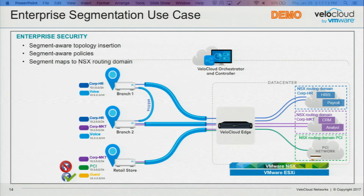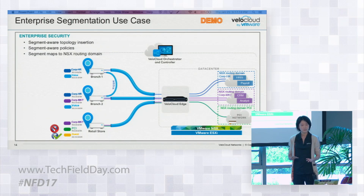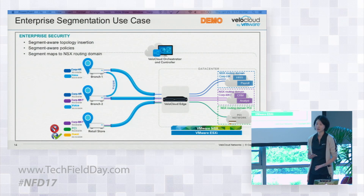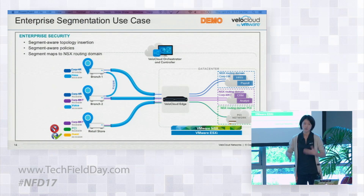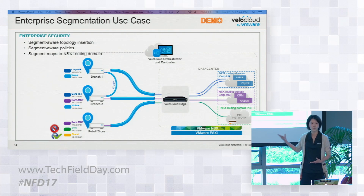Why do we need that? For example, with voice service, you want to enable dynamic edge-to-edge between branches when branch A is calling branch B — you want that media traffic to go directly from branch A to branch B without backhauling. Versus other corporate traffic, where you just want to send it from branch to hub directly. So those are different topologies: one is full mesh or dynamic branch-to-branch enabled; the other has no dynamic branch-to-branch. We'll show you exactly what this means in the demo.